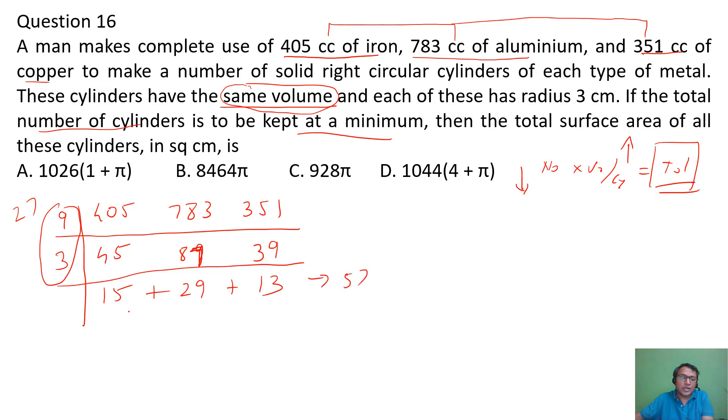Adding up: 20, 30, 40, 49+5=54, 54+3=57 cylinders.